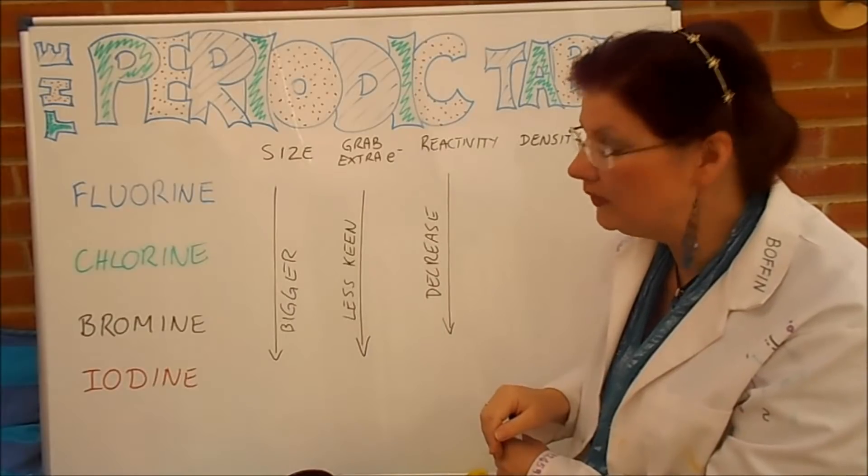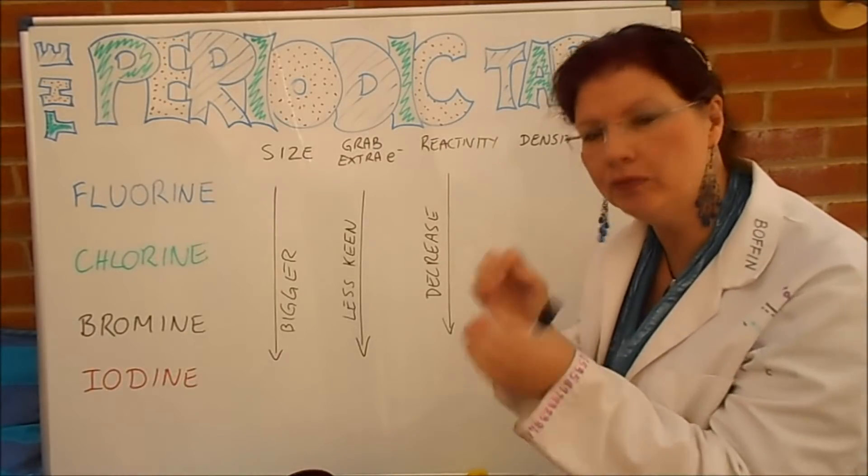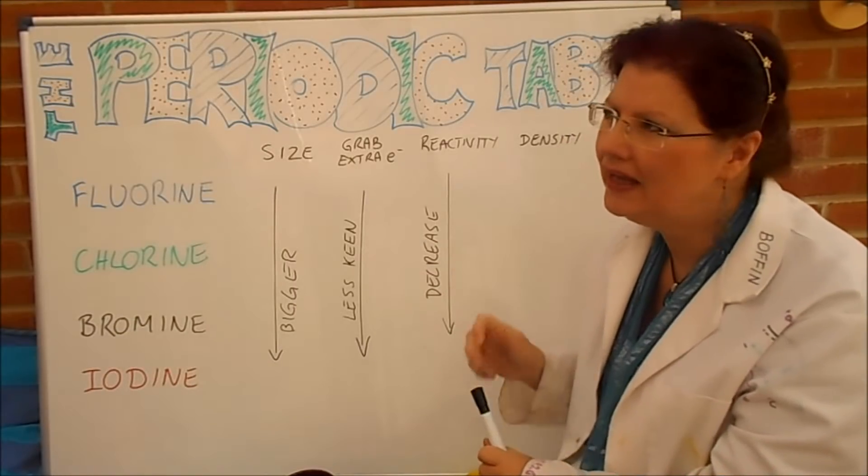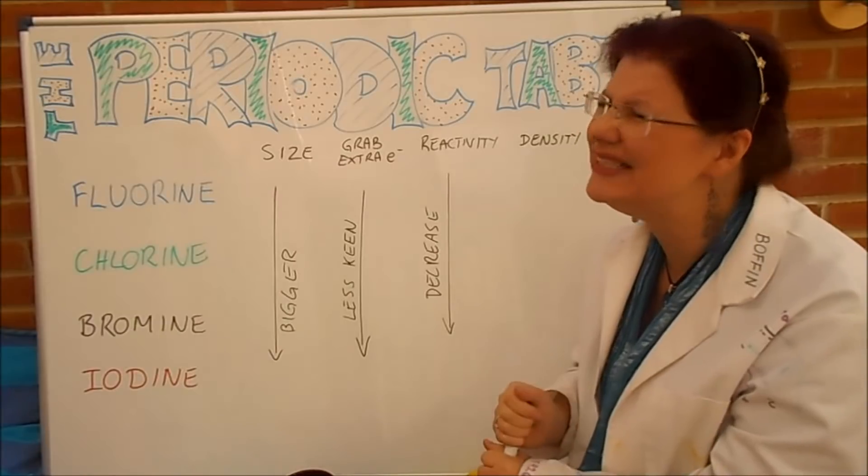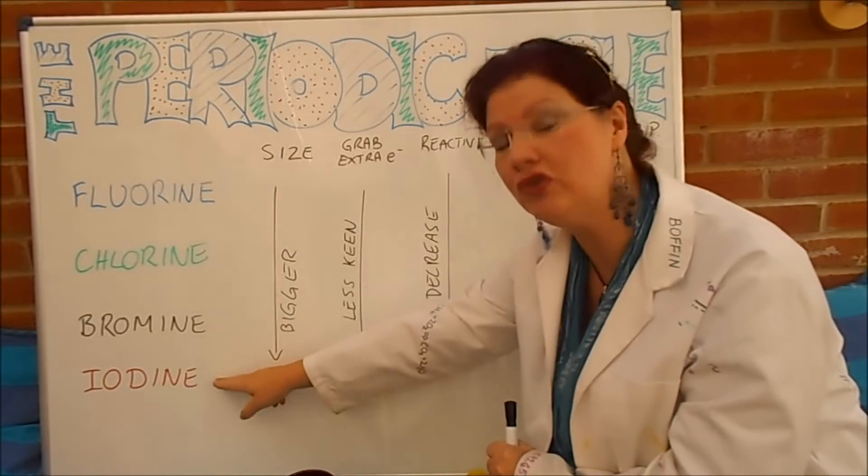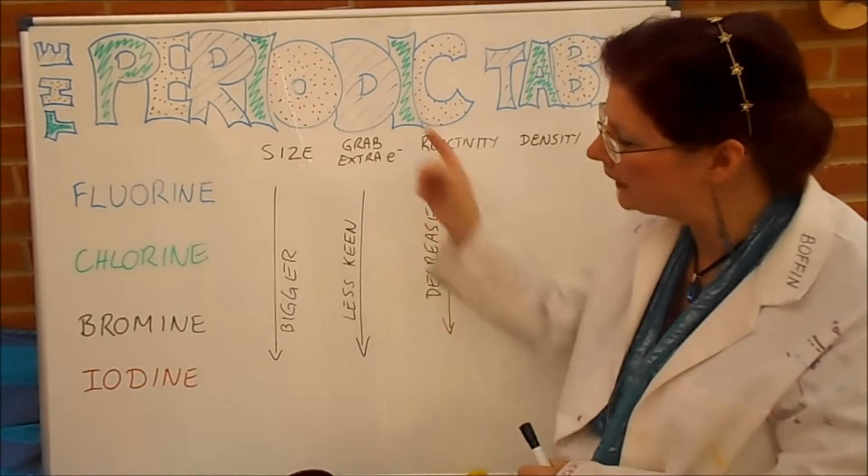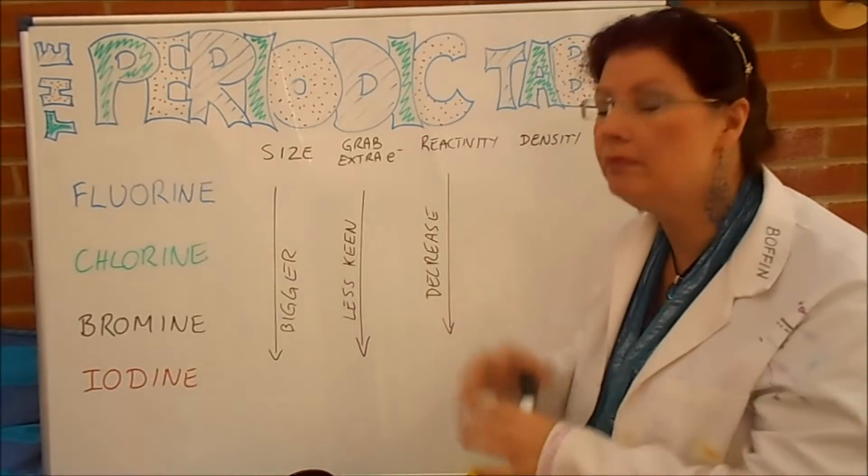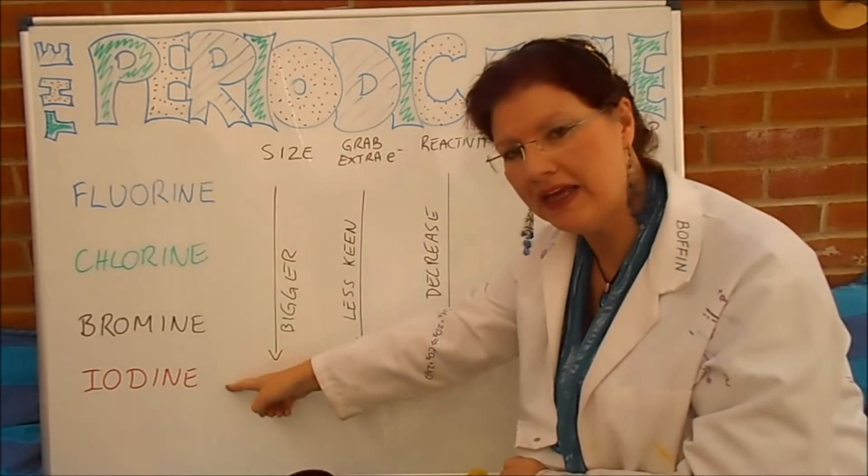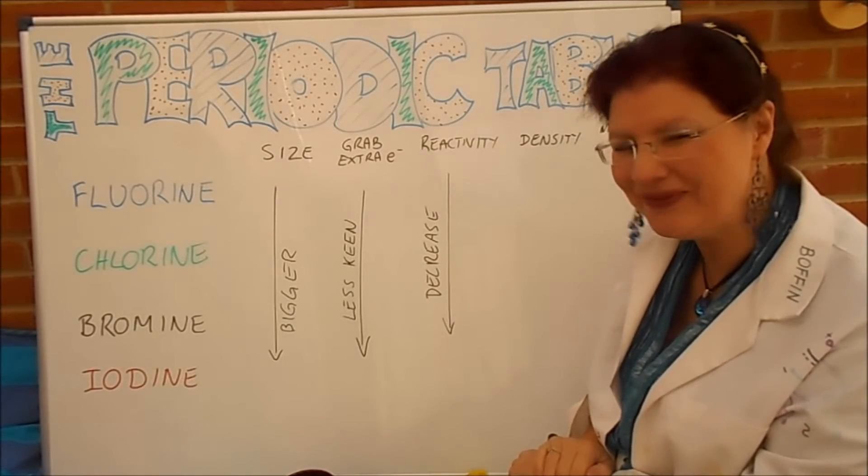So for fluorine, we've got an atomic weight of 19. That means that in its nucleus are 19 heavy things: protons and neutrons. Iodine has 127, I think. That's got 19 heavy things in it, this has got 127 heavy things in it. Basically, it's about six and a half times the mass. Now, it is bigger, it's got more rings on it, but it's a lot heavier. So these ones are relatively light compared to these. So using that information, what happens to the density as we go down the group? Pause the video and fill that in.